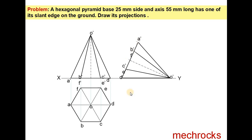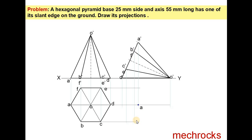Then you draw the projections from this parent view: from D', from C'E', from the axis line, from B'F', from A', and from O'. Then draw the projection lines for E, F, A, D, B, C, and label all the points: A, B, C, D, E, F, and O.